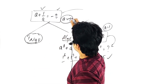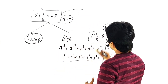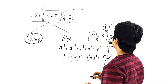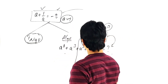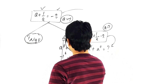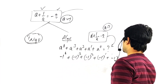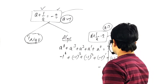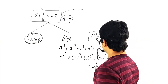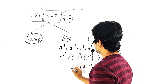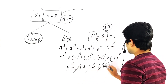If a plus 1 by a equals minus 2, then a equals minus 1. Substituting minus 1: minus 1 to the power 6 plus minus 1 cubed plus minus 1 squared plus minus 1 to the power 1 plus minus 1 to the power 0. Even powers give plus 1, odd powers give minus 1. So plus 1 minus 1 get cancelled, plus 1 minus 1 get cancelled, and the answer is 1.